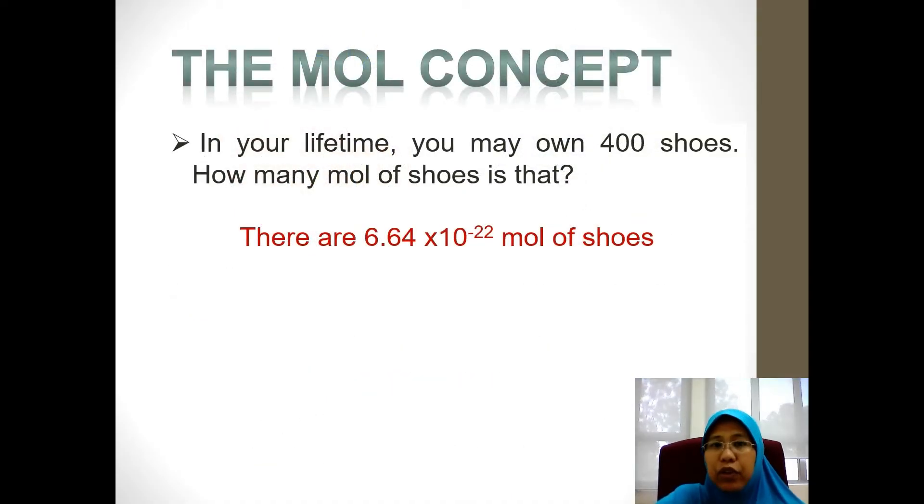To understand this even further, imagine for example you have 400 shoes in your lifetime. How many mole of shoes is that? So you take 400, you divide it with the Avogadro constant, and you get 6.64 times 10 to the power of negative 22 mole of shoes. That's how much shoes you used in your lifetime. In terms of number of mole, you can actually calculate the number of mole of all the items that you have in the world.